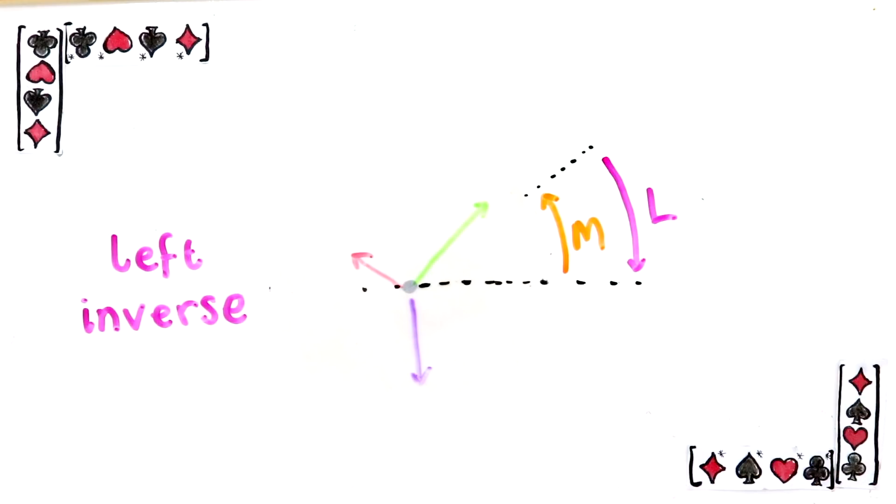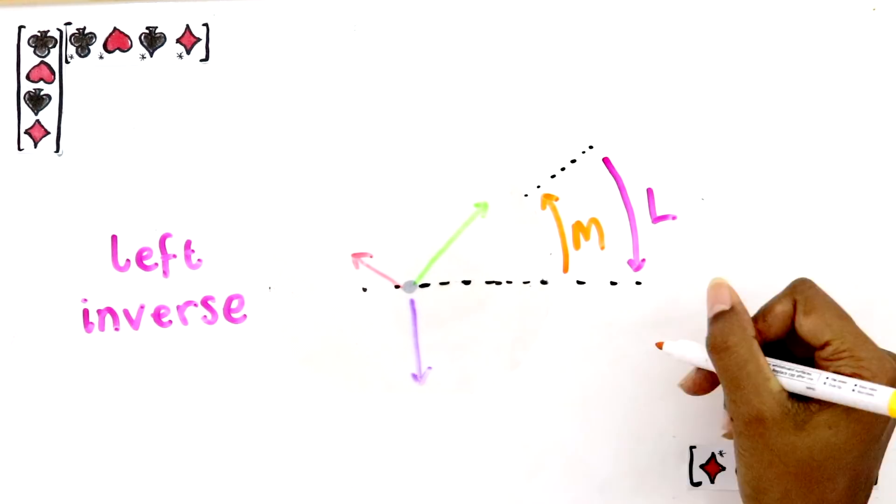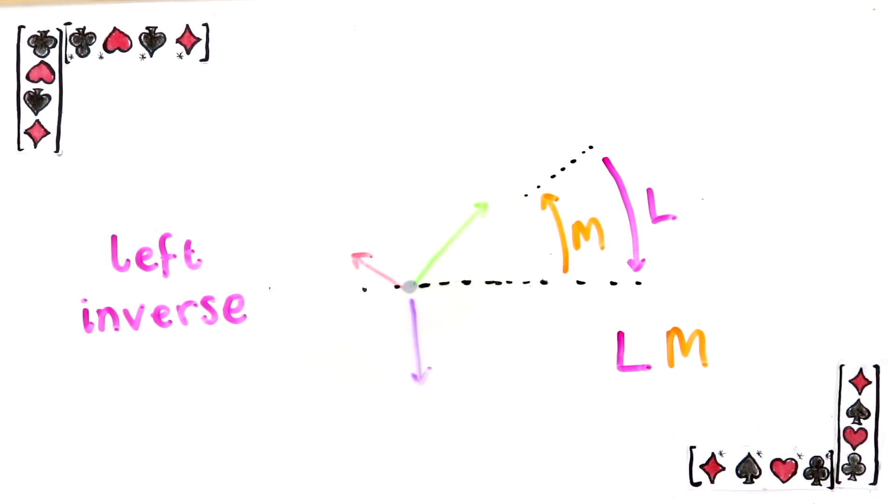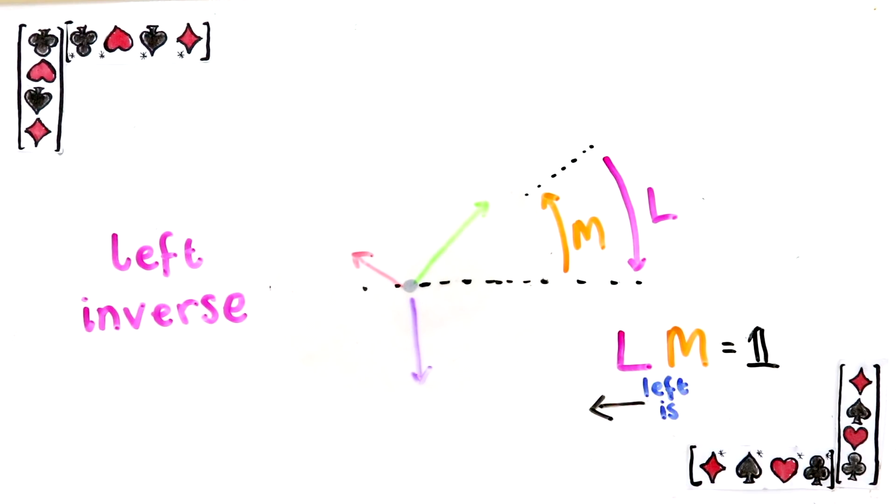That's all a left inverse is. It's the matrix that undoes the original matrix, so it's like you've done nothing at all. If I wanted to write this as an equation, it'd say, if you do M and then you do L, it's the same as if you did nothing. This thing is called the identity matrix by the way and it just means the transformation where you do nothing. This thing is called the left inverse for hopefully obvious reasons.